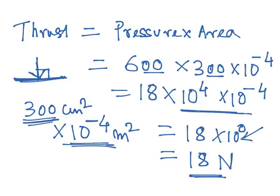You have to make sure all units are in SI units for any of these equations. The pressure was in Pascal (SI unit) and the area had to be converted to meter square (SI unit). That is our answer. Thank you, we will come back with the next problem. Bye bye.